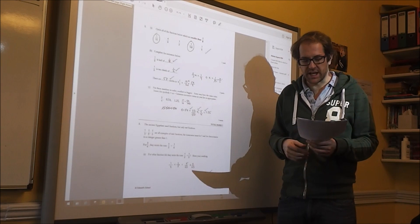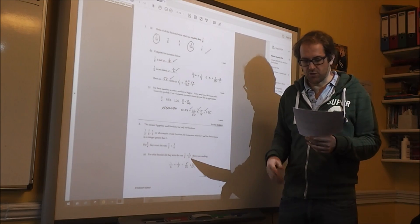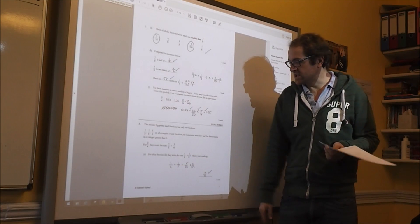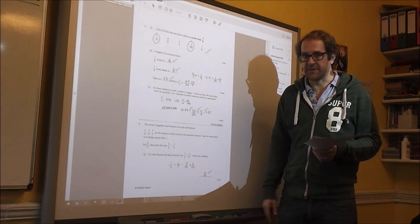Question two is about Egyptian fractions. So what you have to do is add those two fractions together, which is 7 tenths.